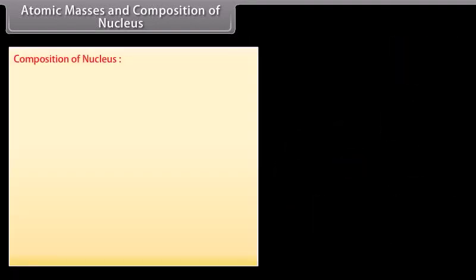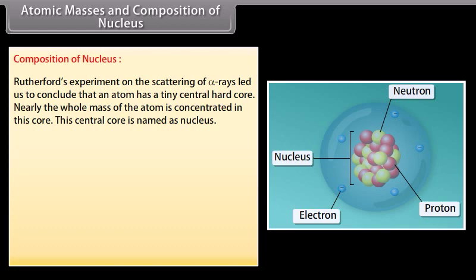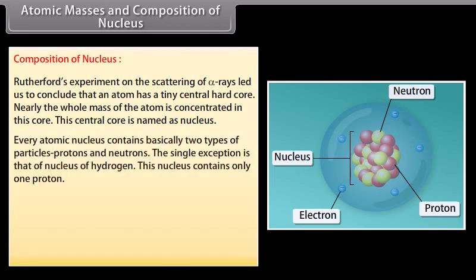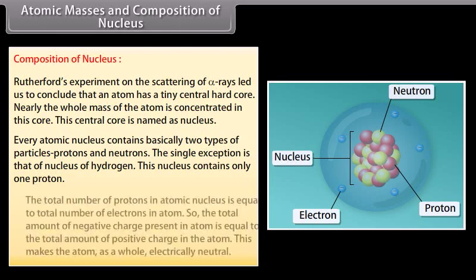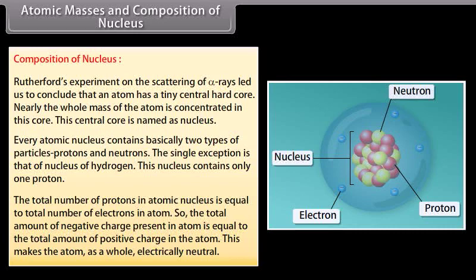Composition of nucleus: Rutherford's experiment on the scattering of alpha rays led us to conclude that an atom has a tiny central hard core. Nearly the whole mass of the atom is concentrated in this core, named as nucleus. Every atomic nucleus contains basically two types of particles: protons and neutrons. The total number of protons in the atomic nucleus is equal to the total number of electrons in the atom, making the atom electrically neutral.